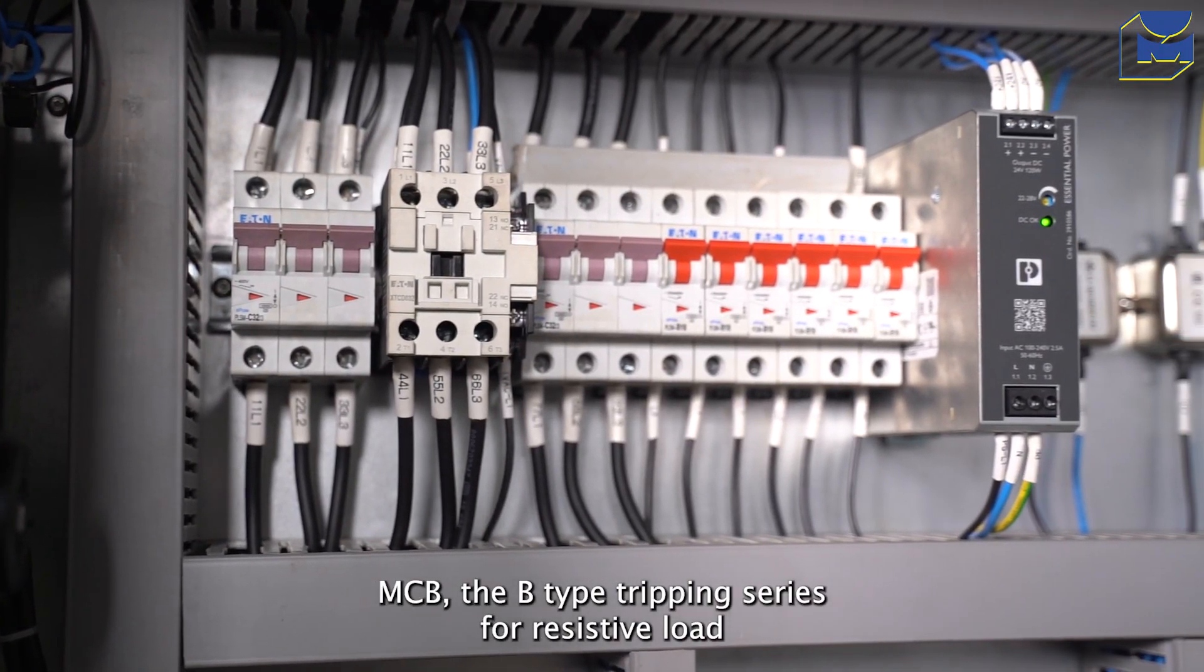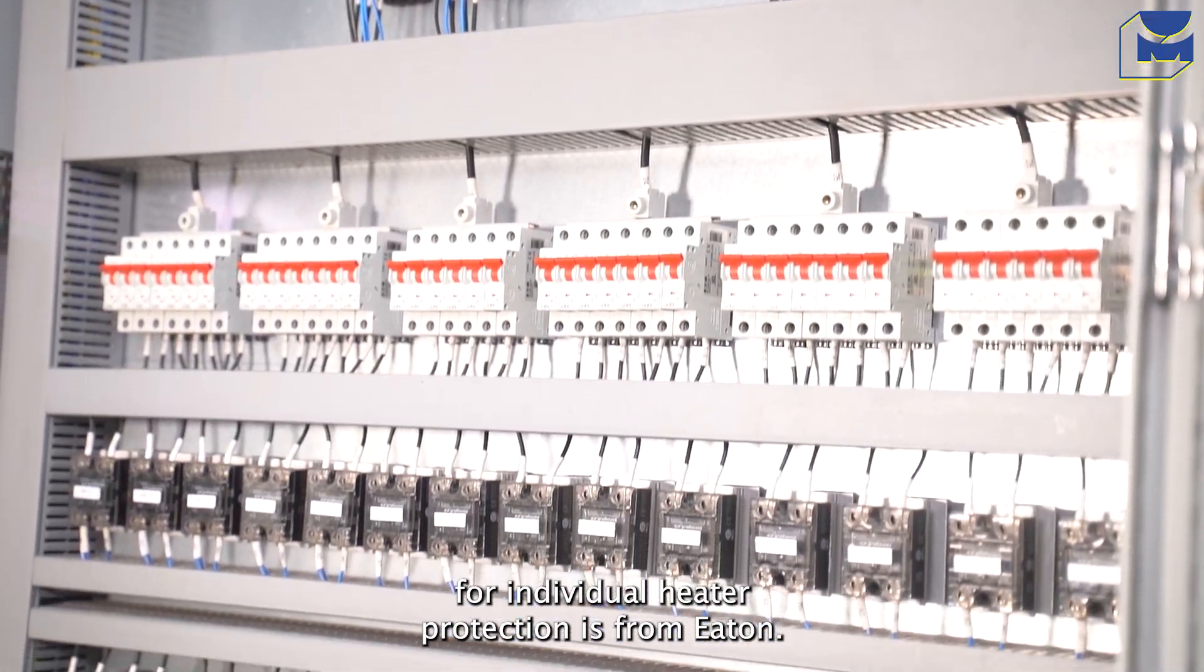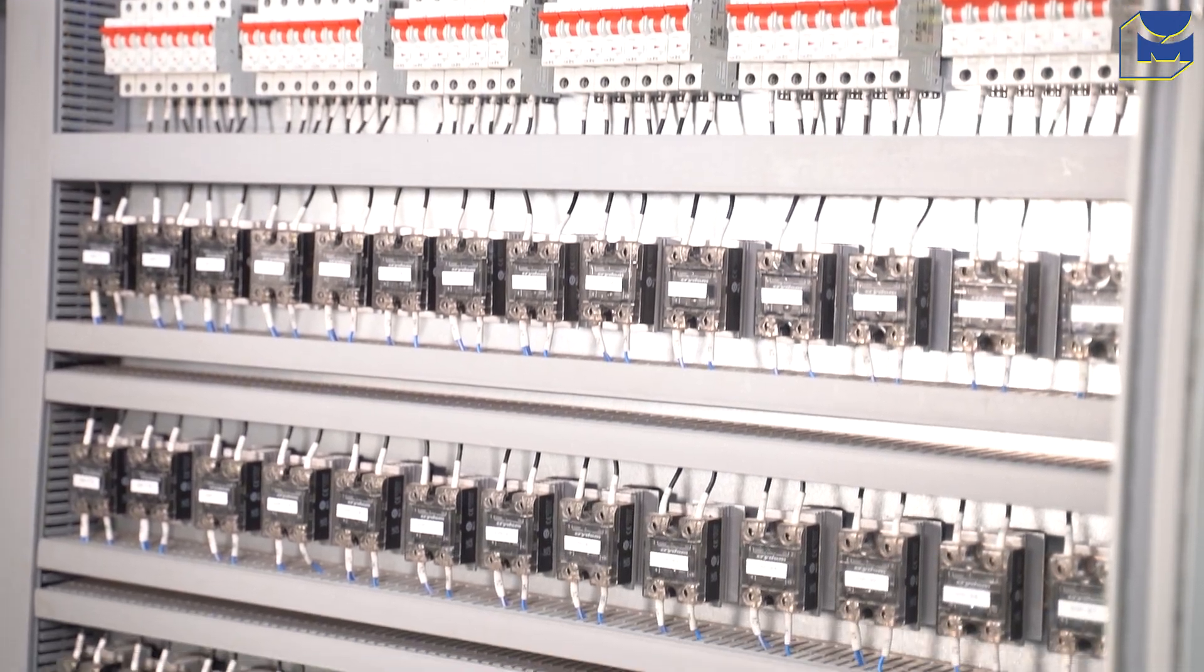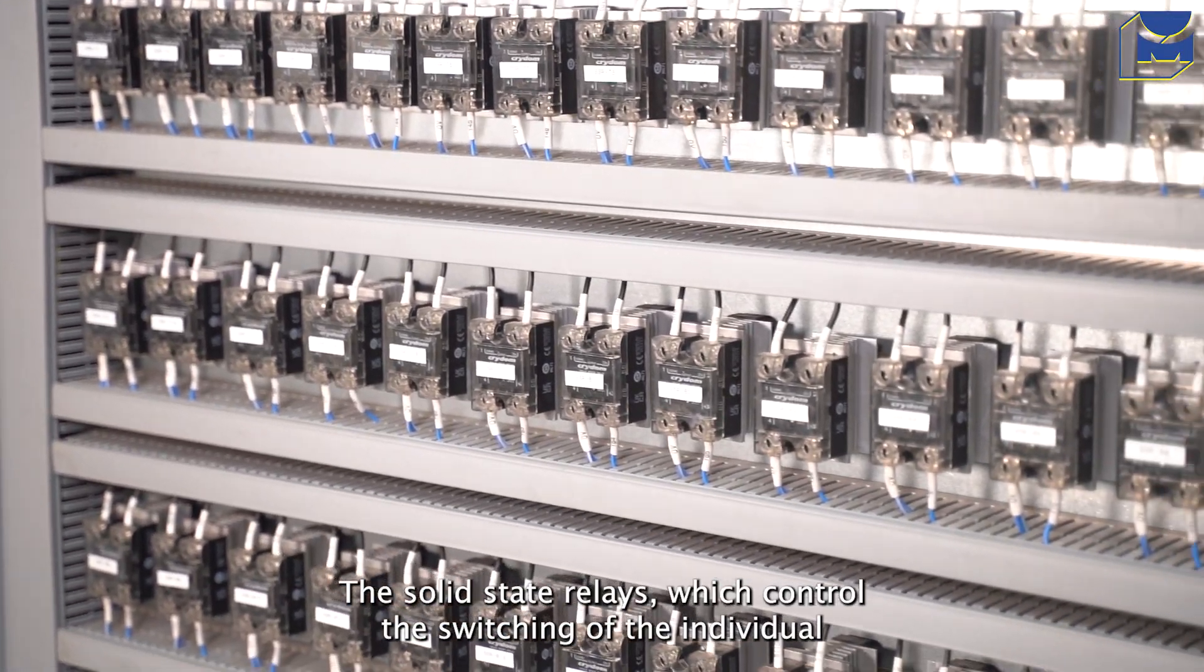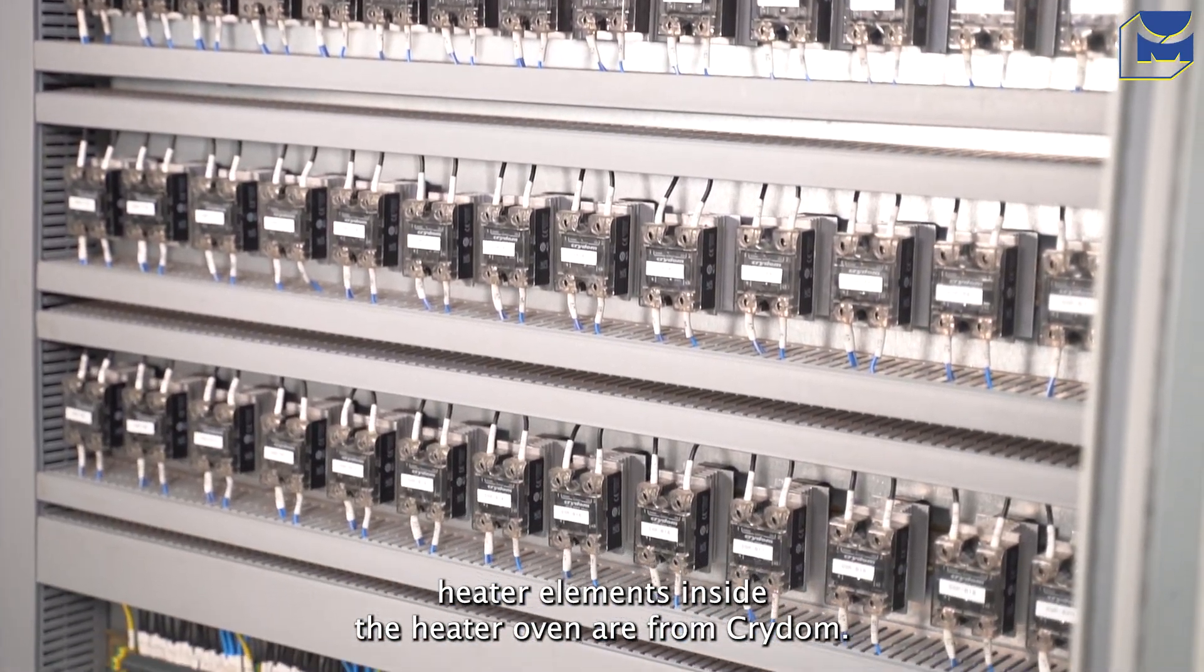MCB, the B-type tripping series for resistive load, for individual heater protection is from Eaton. The solid state relays which control the switching of the individual heater elements inside the heater oven are from Crydom.